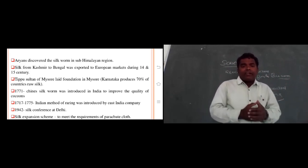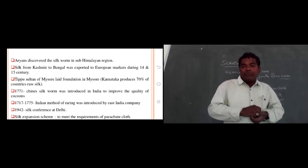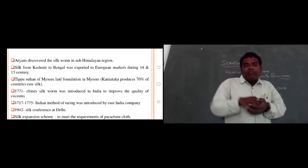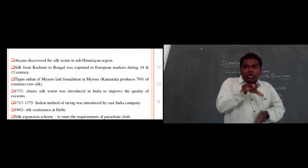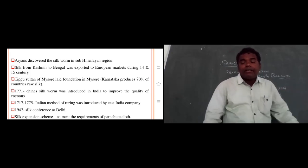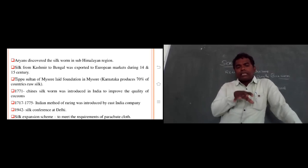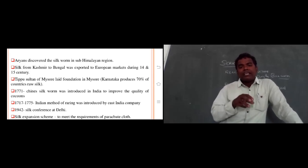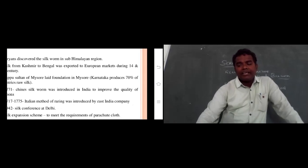In 1771, Chinese silk worms were introduced in India to improve the quality of cocoons. In 1775, Italian methods of rearing were introduced by the East India Company. In 1942, a silk conference was held at Delhi, and a silk expansion scheme was initiated to meet the requirement of parachute cloth.